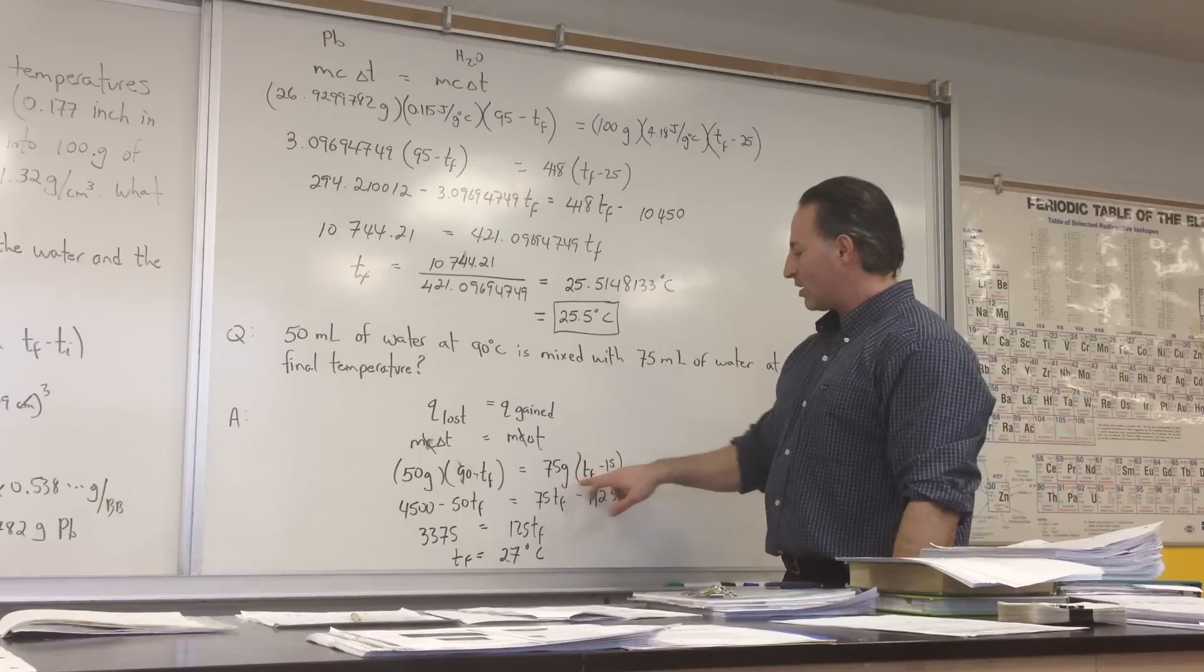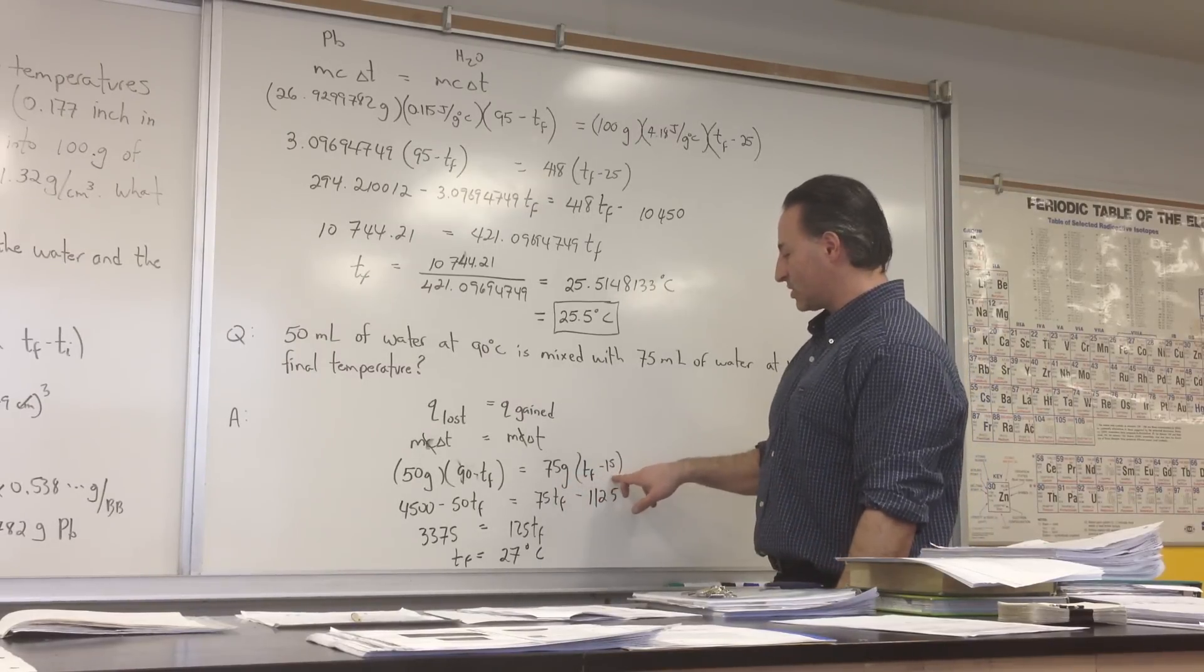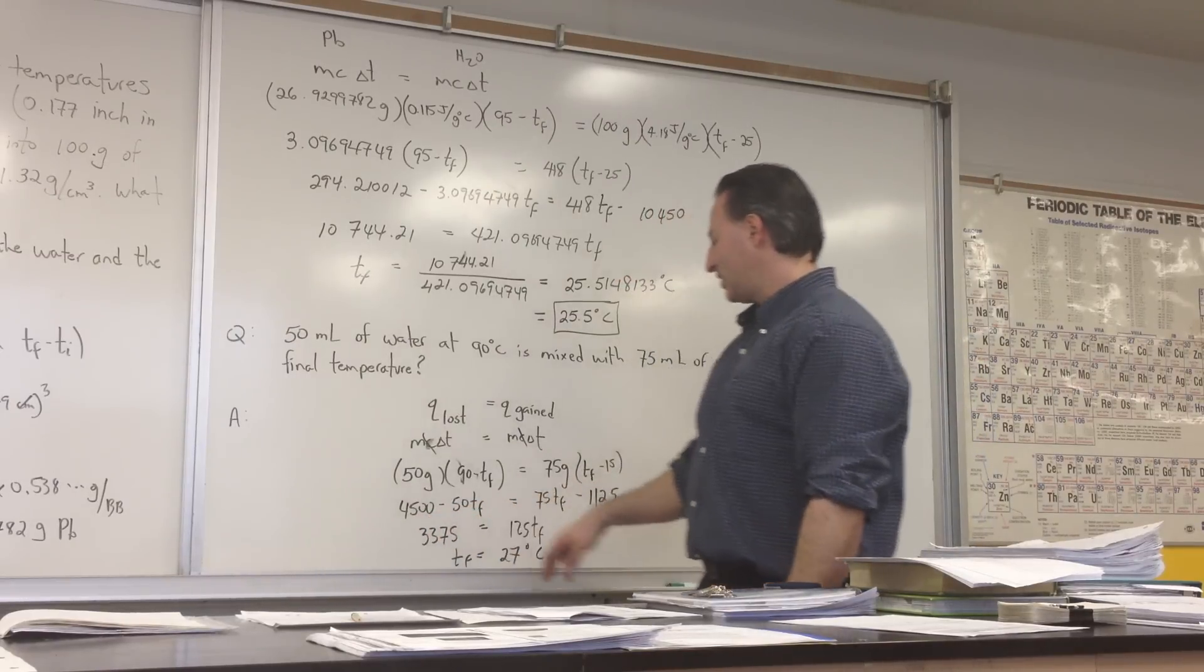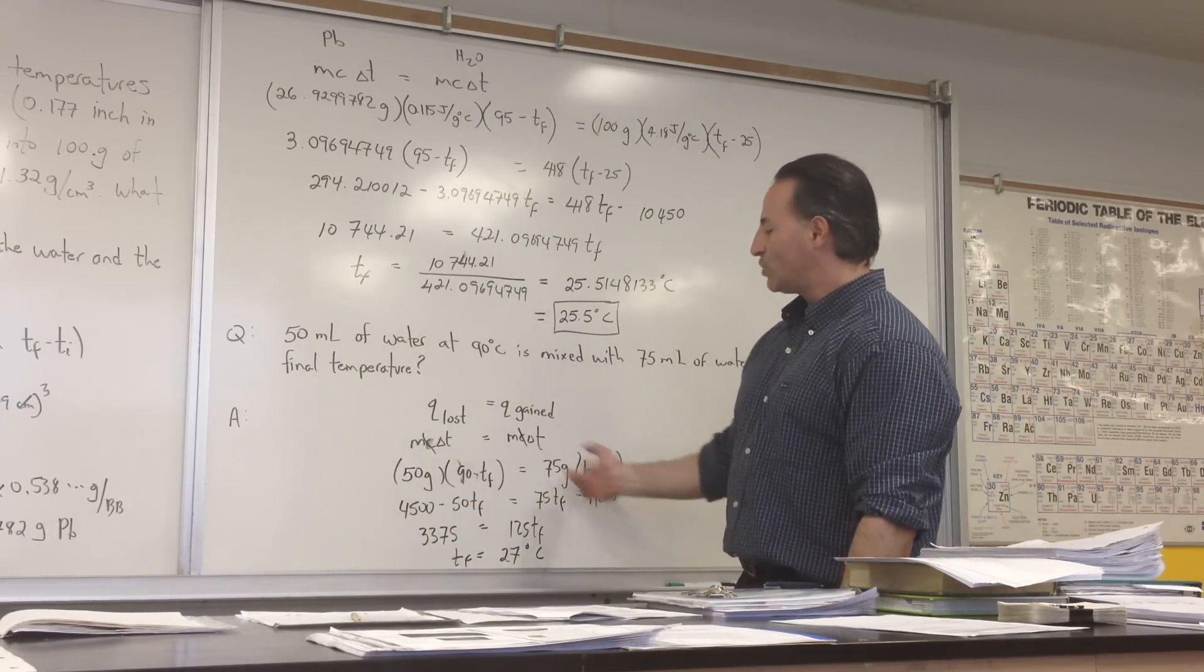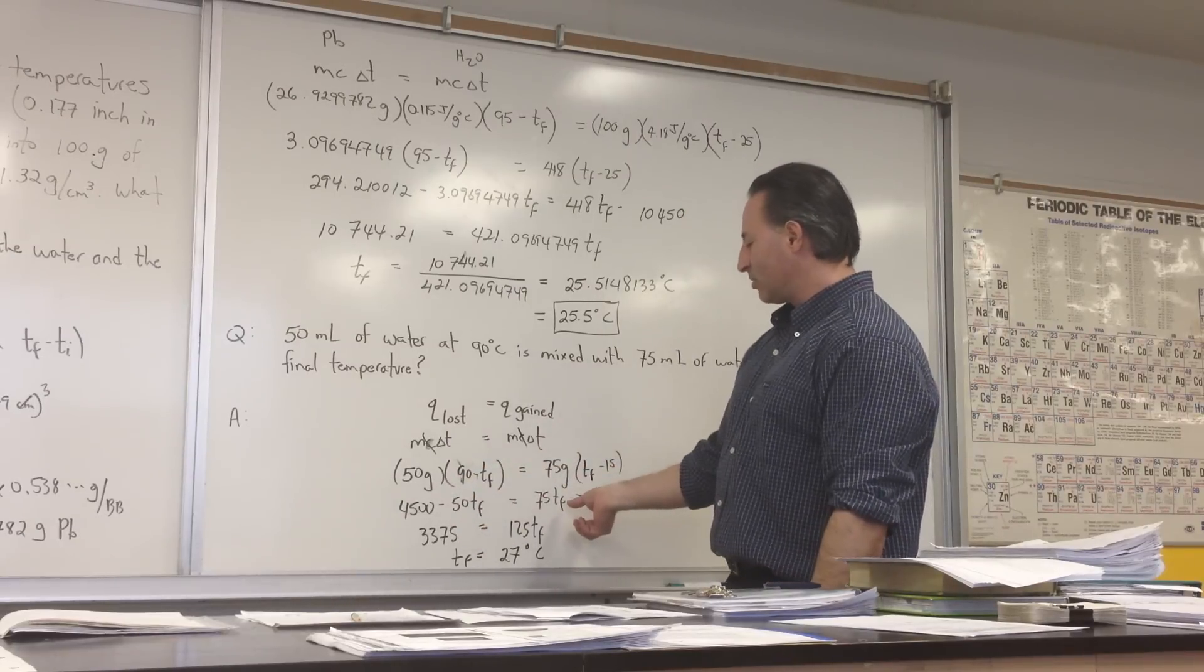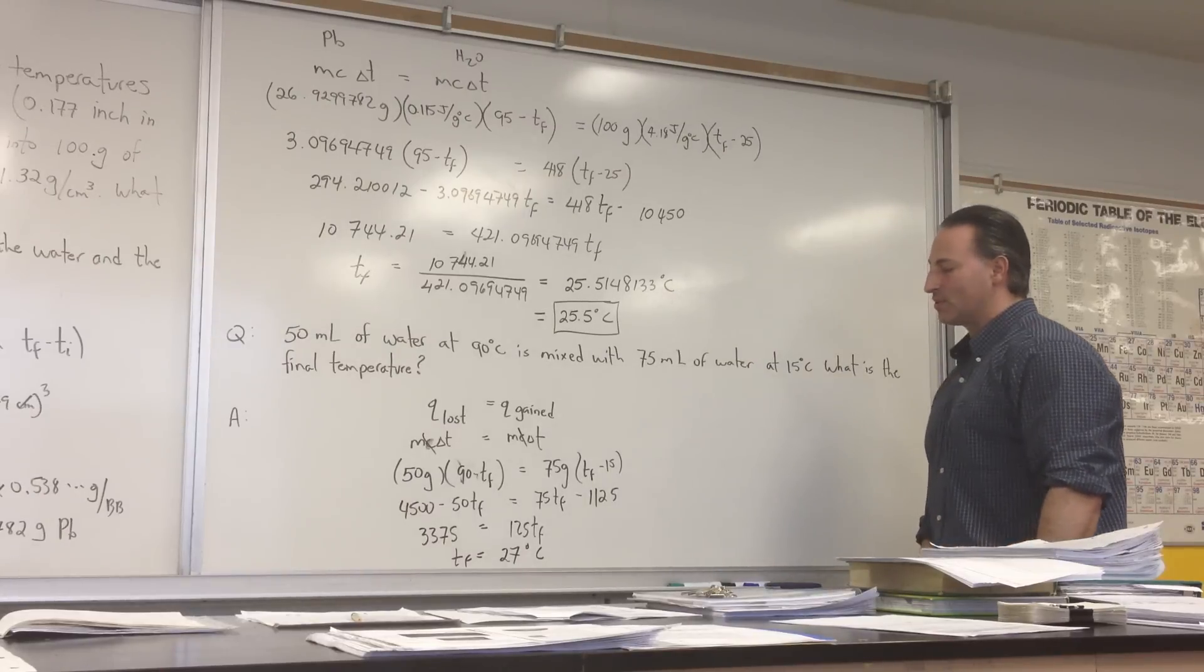So 75 grams of water times the final temperature of the water, of the cold water, which we don't know, but we do know its initial temperature. And we get 4500 minus 50 TF is equal to 75 TF minus 1125. We transpose the numbers together, and we put all the variables together, solve for TF, and we find that the temperature is at 27 degrees Celsius.